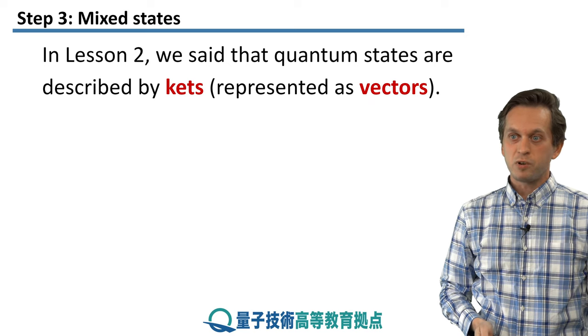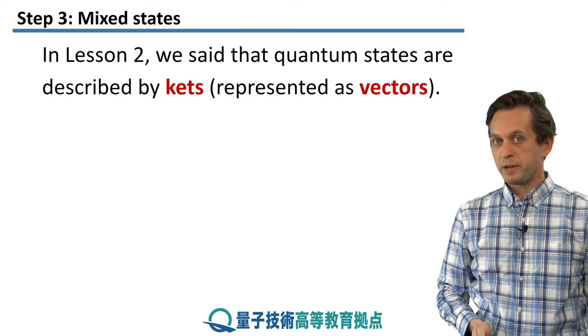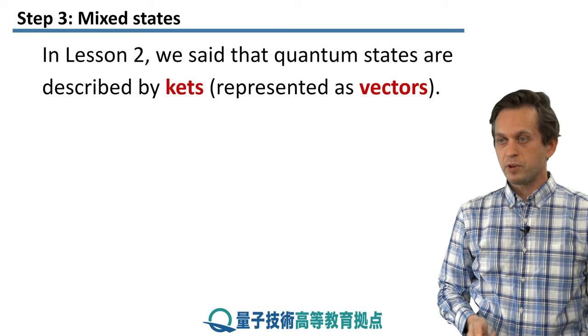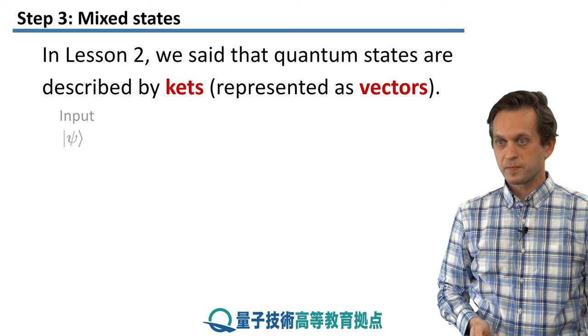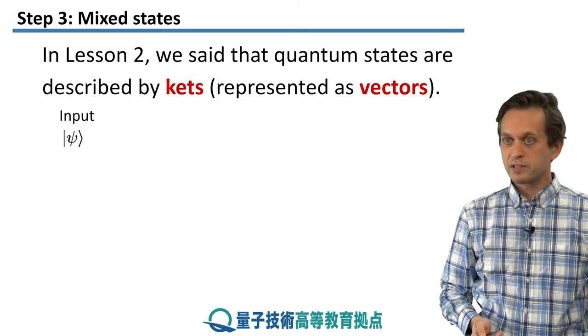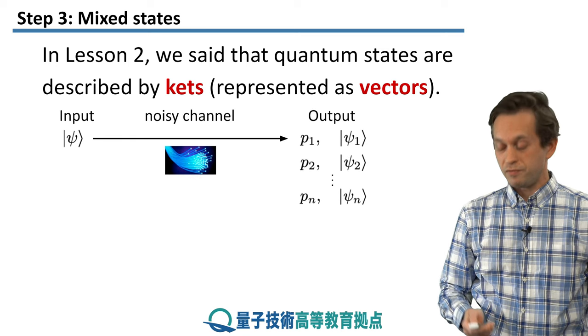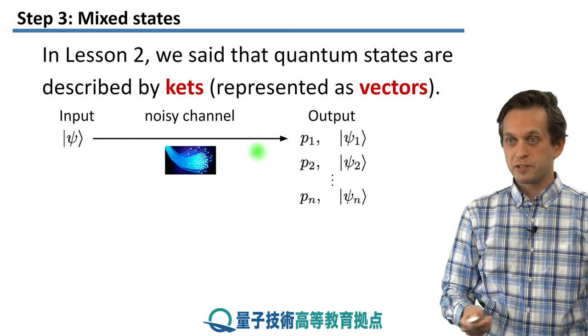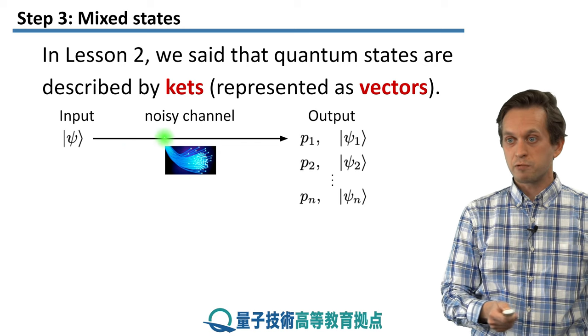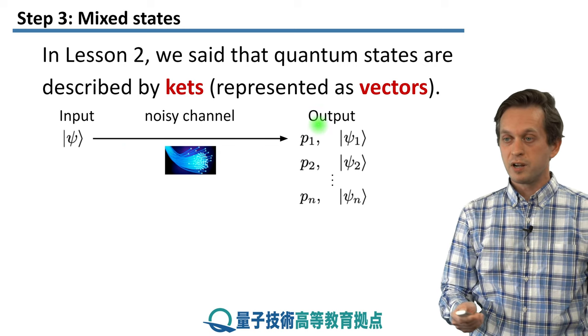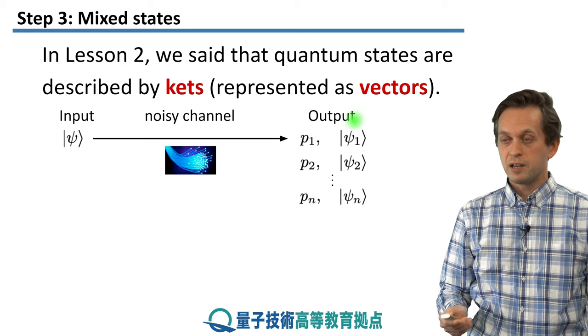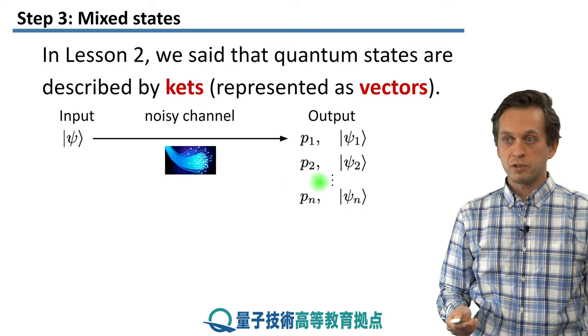So we saw in lesson 2 that a quantum state can be described by kets, and we represent them as vectors. But as we said in the previous step, life and the world is very noisy. So for example, if we are trying to communicate an input state psi through a noisy channel like an optical fiber, usually what we get at the end is some distribution of different states weighted by different probabilities.